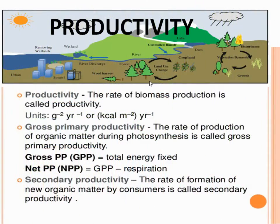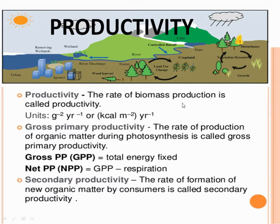Now we will see what does productivity mean. Productivity is the ratio of biomass production in an ecosystem. The rate of production of biomass is called productivity.